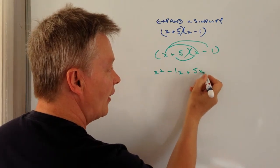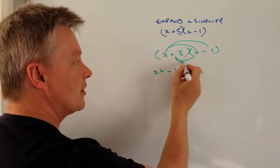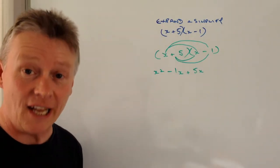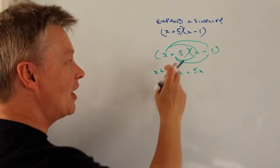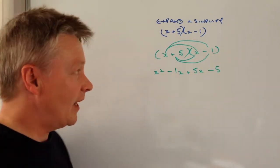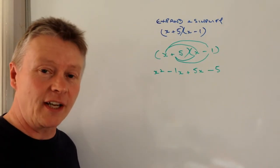We've got plus 5 times X, which is plus 5X. Then we've got plus 5 times minus 1. A positive times a negative is a negative, and 5 times 1 is minus 5. That's really what you should be getting.